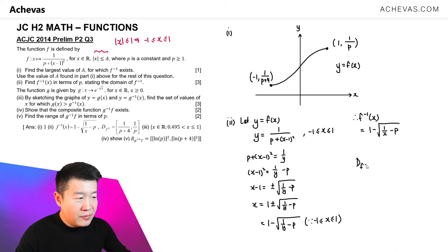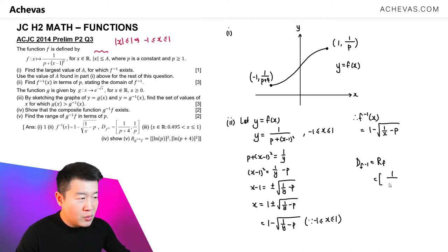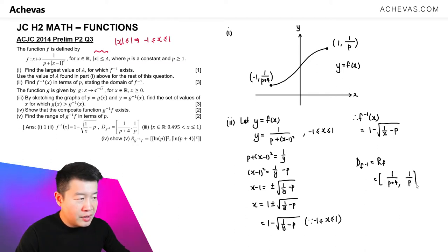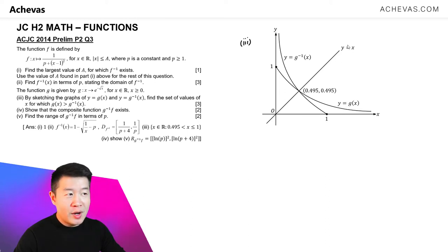The domain of f inverse is the same as the range of f. The range of f is between 1 over (p plus 4) and 1/p, inclusive of both values, using square brackets. To sketch the graph of g(x) and g inverse(x), I've also included the line y equal to x to display the symmetrical relationship between the graphs of g and g inverse about that line.